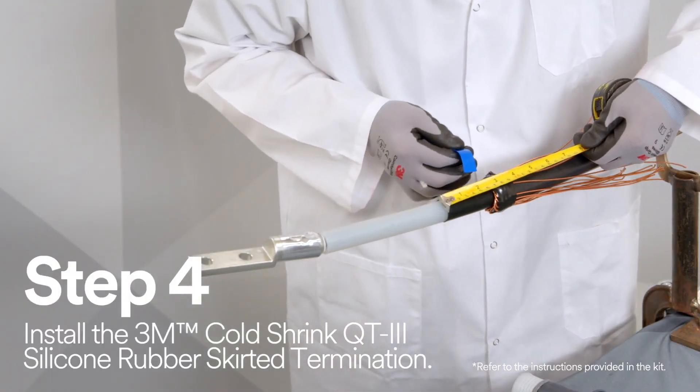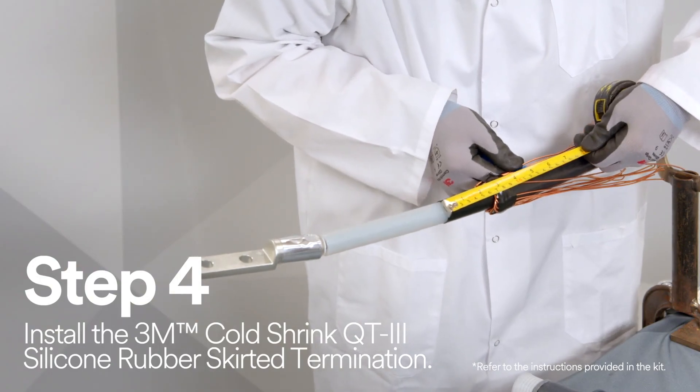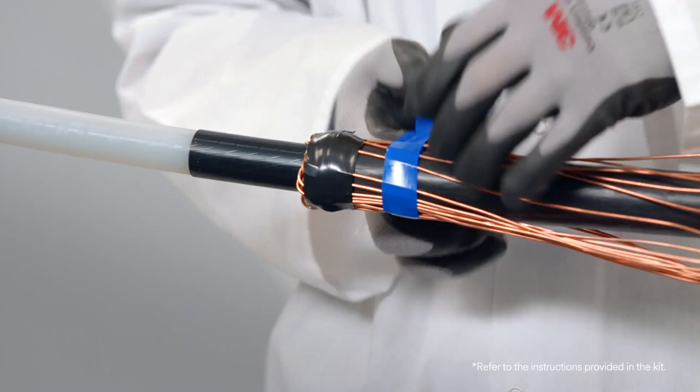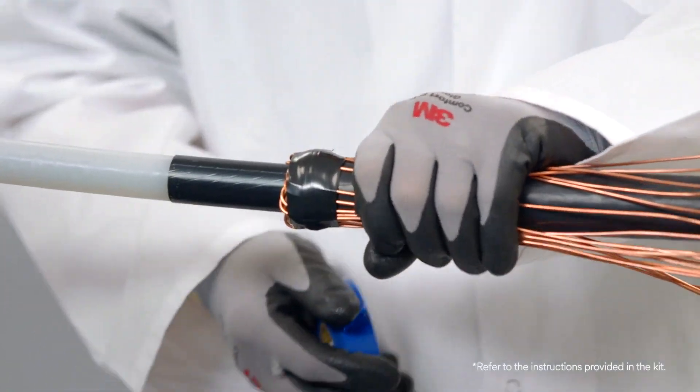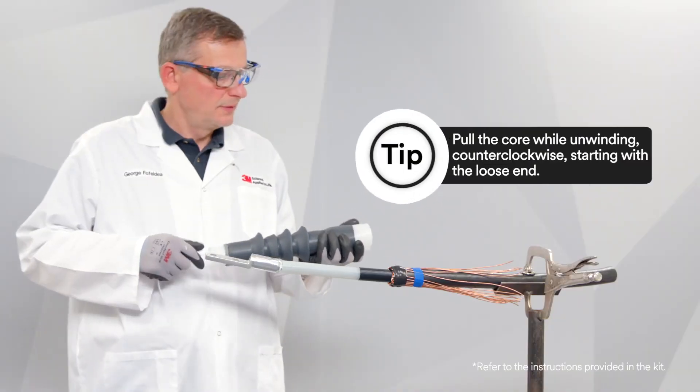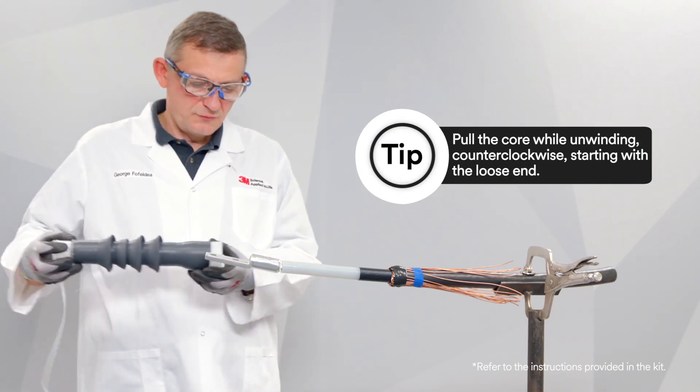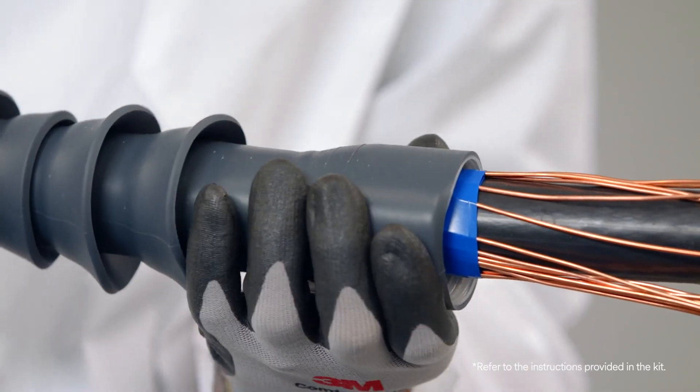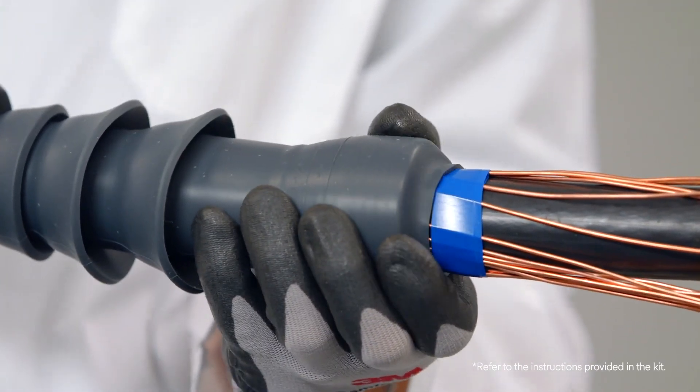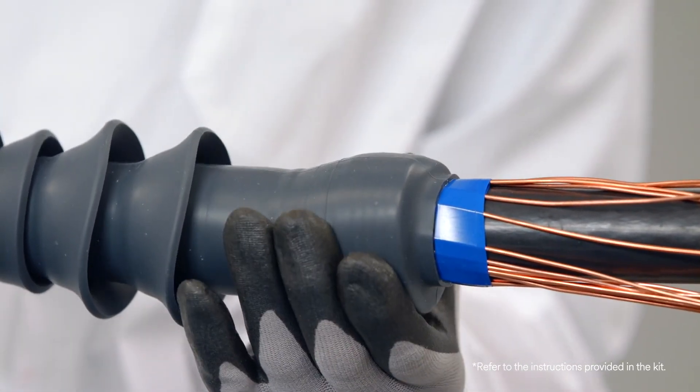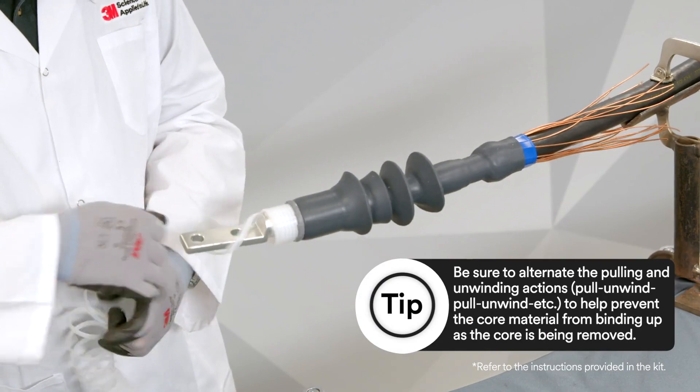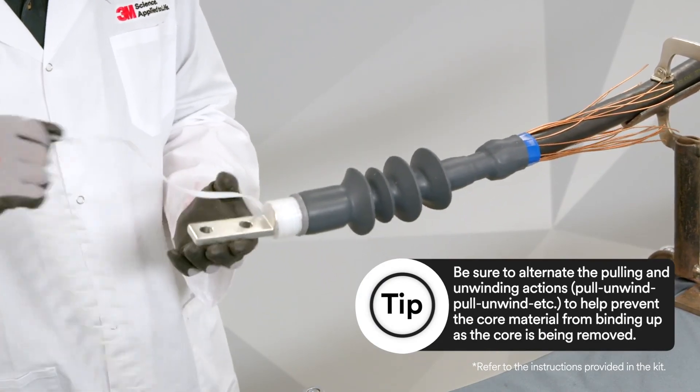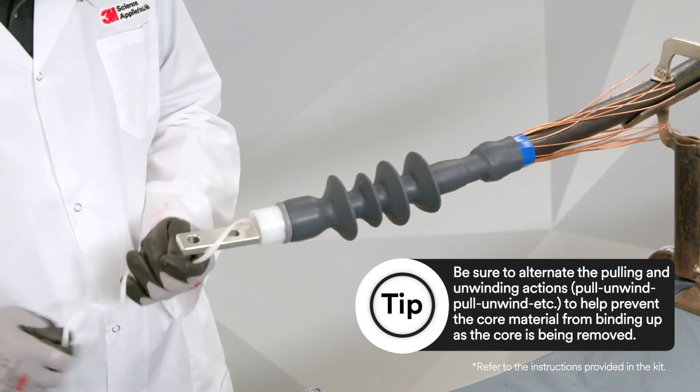First start by adding marker tape. Secure Scotch vinyl color coating electrical tape 35 to the cable jacket 4.5 inches from the cable semi-con edge. Then slide the termination body onto the cable so it aligns to the edge of the marker tape and remove the core. Make sure the termination body, not the core, is right at the edge of your marker tape.